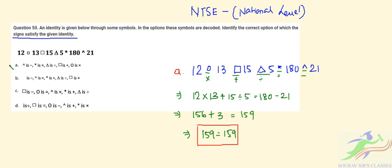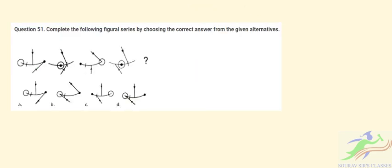In Question 51, complete the following figure series by choosing the correct answer from the given alternatives. Just closely look at the figures. We have been given figures 1, 2, 3, and 4. First, let's look at this particular circle. The circle in figure 1 is there, figure 2 is in the middle position, figure 3 is extreme right, figure 4 is again in the middle.